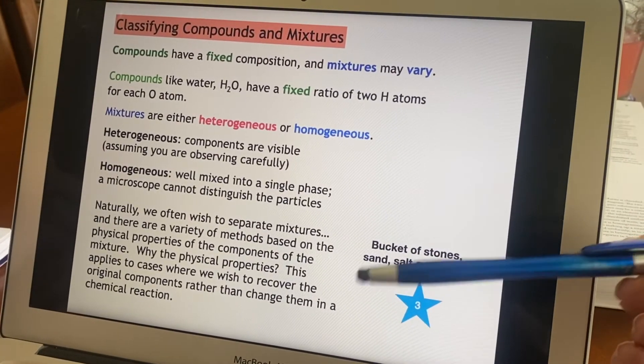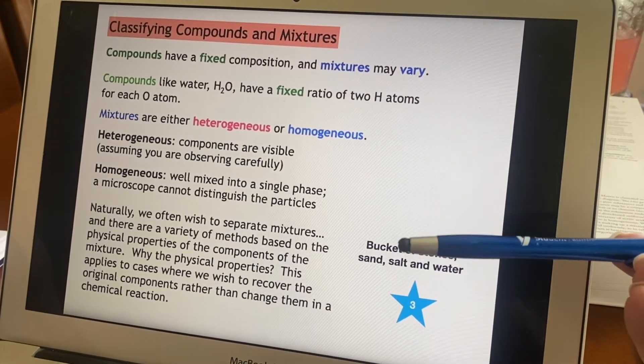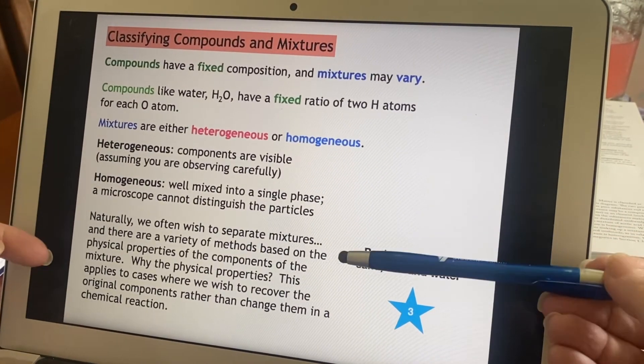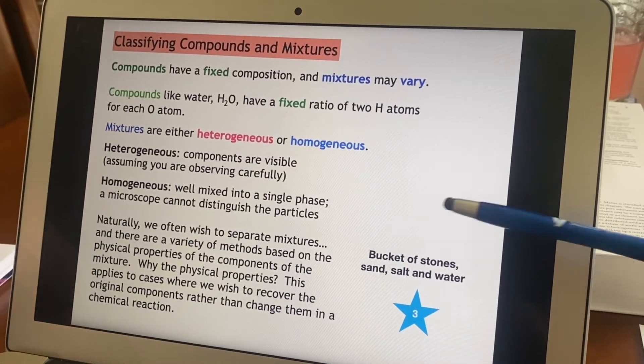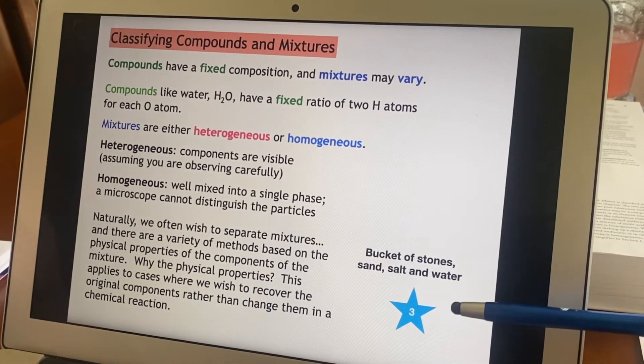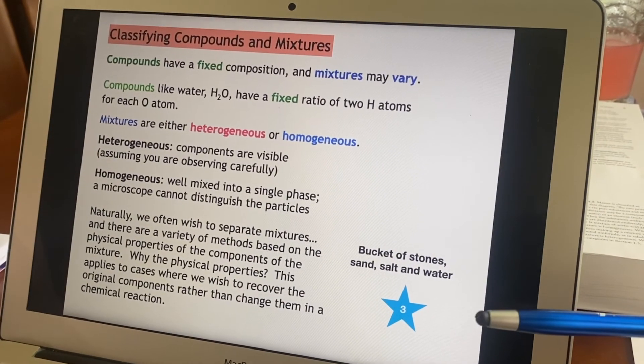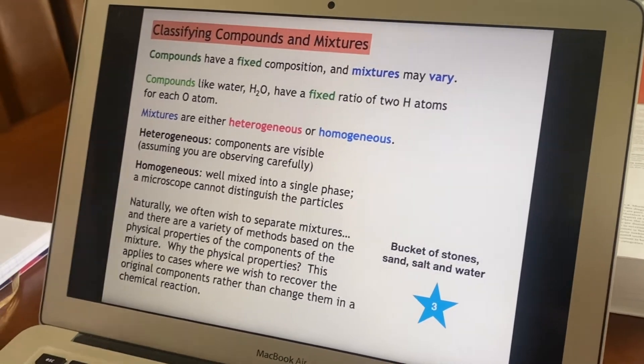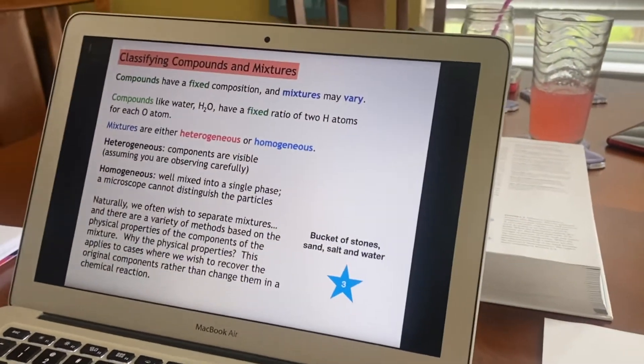So homogeneous versus heterogeneous. And when we're separating mixtures, we mentioned that there are various properties that we could observe. What about the actual methods? We're going to just do a small example then. If I had a bucket that was filled with stones and sand and salt and water, how would I manage to recover those, each of them separately? I don't want to change them. When I'm done, I want separate the stones, the sand, the salt, and the water.